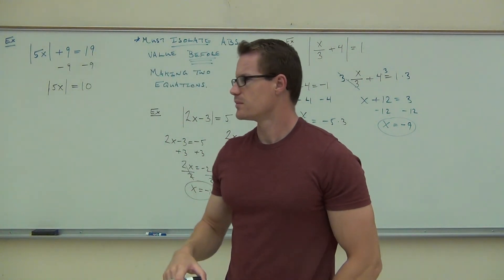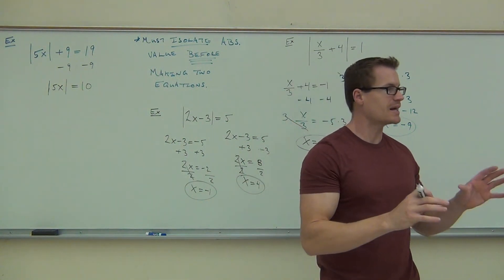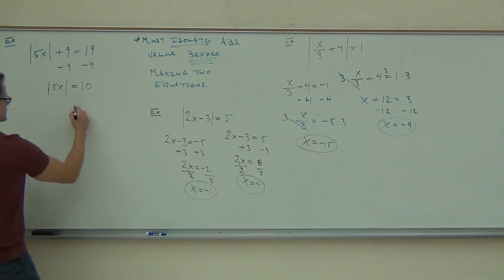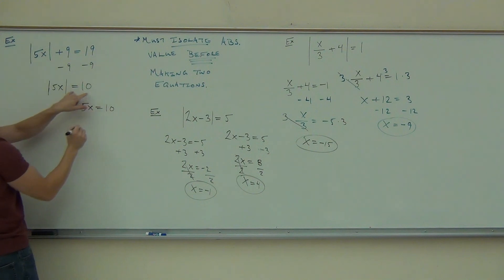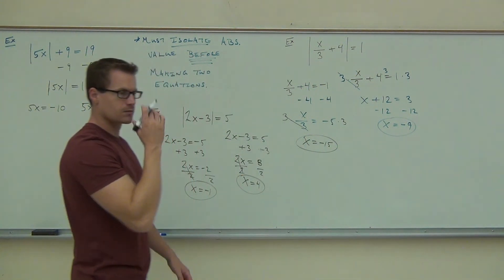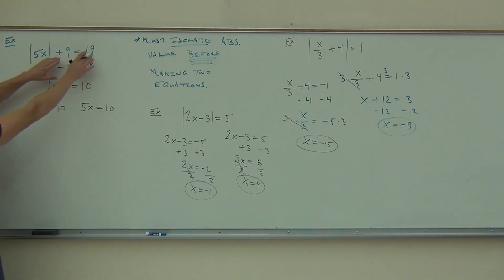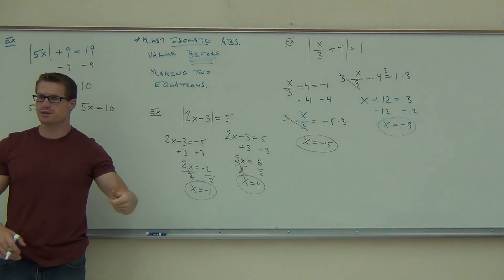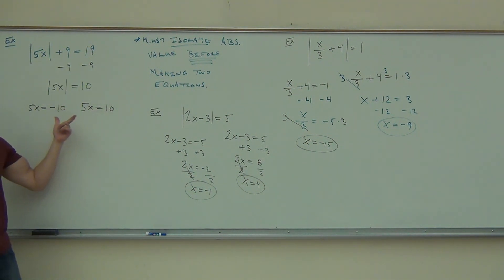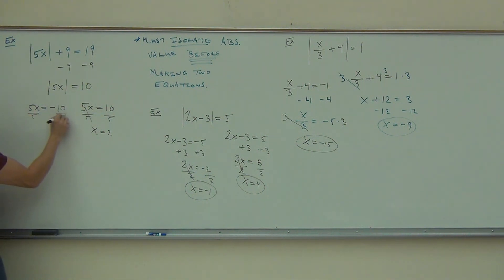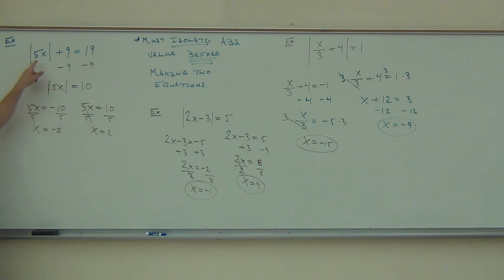Before doing any actual math on the isolated equation, we make our two equations: 5x equals 10, and 5x equals negative 10, because the absolute value will make that positive no matter what. Dividing by 5 gives us x equals 2 and x equals negative 2. Let's check these to make sure we have it right. If I plug in 2, what's 5 times 2?